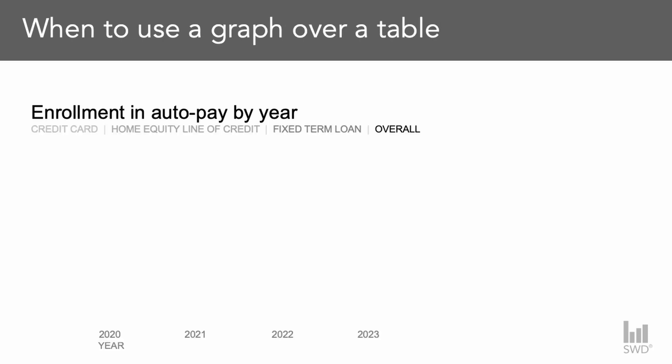Then let's move time to our x-axis — we can see it ranges from 2020 to 2023. Our y-axis is going to be the percent metric: the percent of our customers that are enrolled in auto pay.